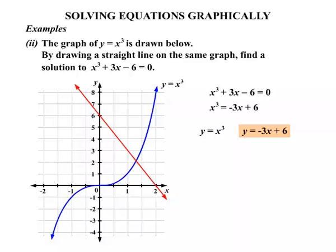We're looking for the intersection point of the two graphs. Reading off our axes, the x value is somewhere between 1 and 2 — certainly not on a whole number this time. Estimating as best we can from the graph, x equals 1.3, rounded to one decimal place.